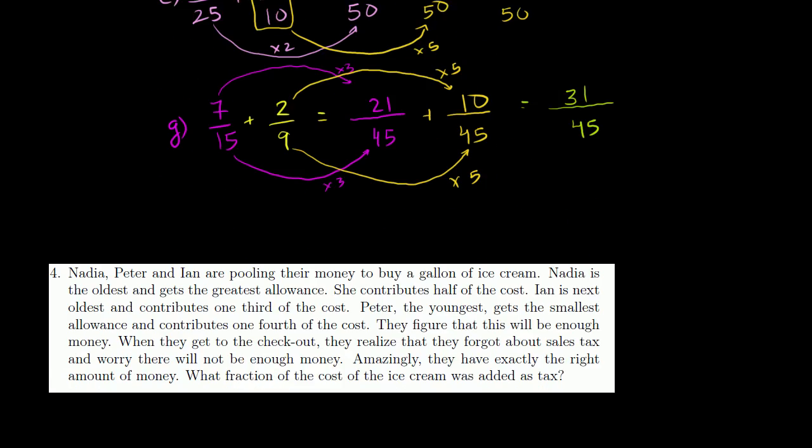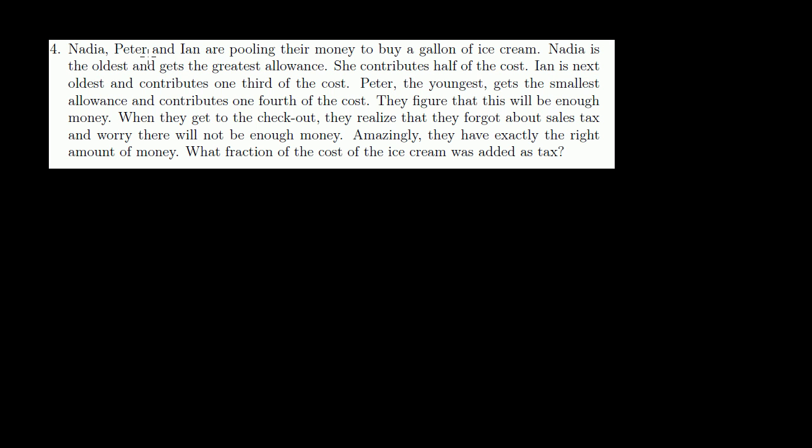Let's do one more problem down here, a word problem. Nadia, Peter, and Ian are pooling their money to buy a gallon of ice cream. Nadia is the oldest and gets the greatest allowance. She contributes half the cost. So Nadia is contributing half the cost. So that is Nadia right there. Ian is next oldest and contributes 1/3 of the cost. So Ian contributes 1/3. That is Ian. Peter, the youngest, gets the smallest allowance and contributes 1/4 of the cost. So Peter, right, this is 1/4 of the cost. Peter contributes 1/4 of the cost.